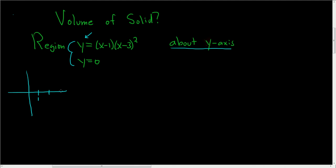So here's 1, 2, 3. We know that the multiplicity of 1 is 1, and the multiplicity of 3 is 2. So we have odd multiplicity at 1, so it's going to cross the x-axis. And here we have even multiplicity, so it's going to touch and turn around. If you use a calculator to help, or just use more college algebra, it's going to look something like that. Most people just use a calculator to help them graph these.